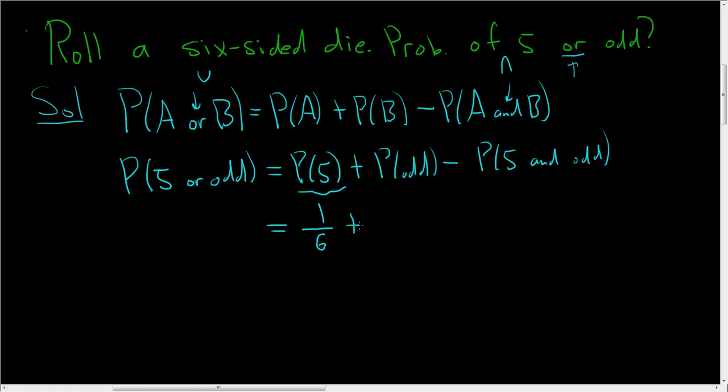Plus, there are three odd numbers between one and six. Those numbers are one, three, and five. So there's three ways to pick an odd number, and six ways to pick a number.